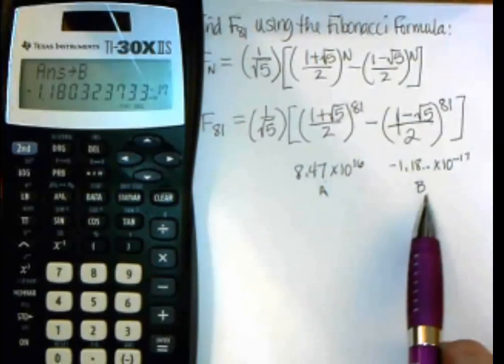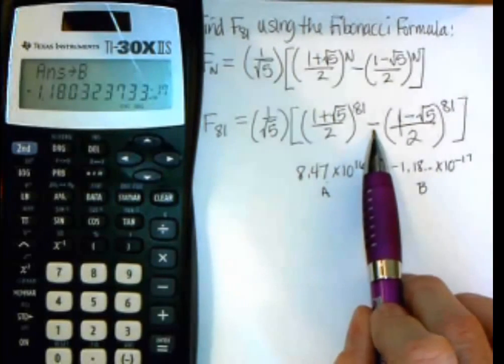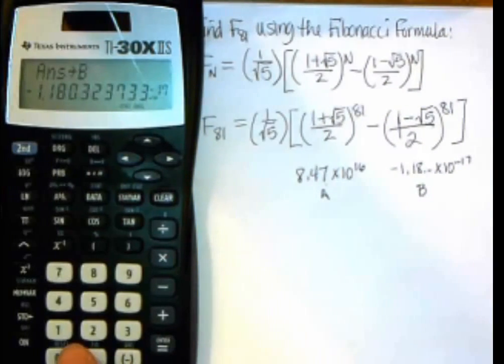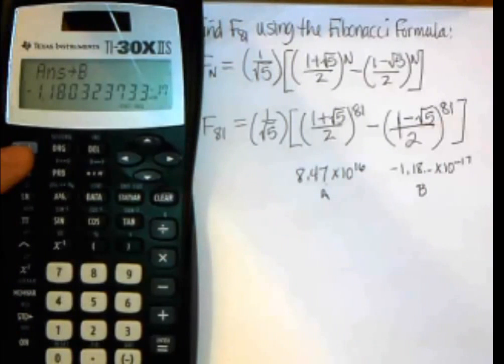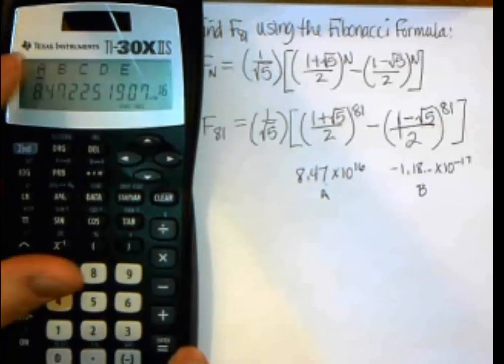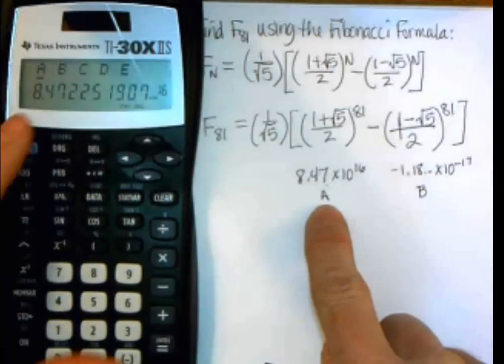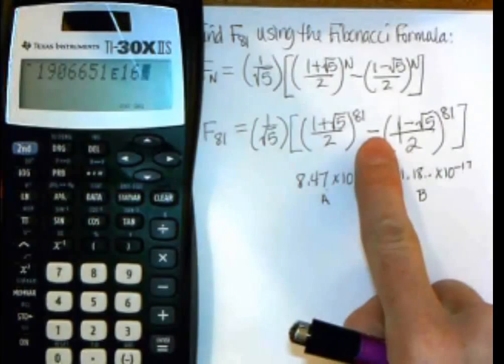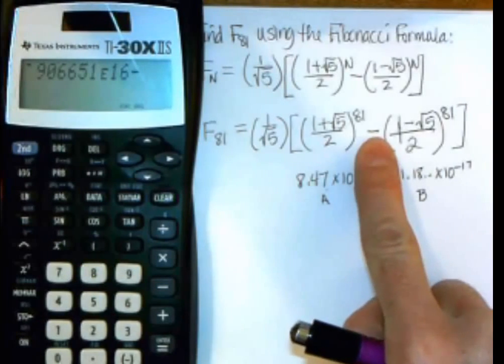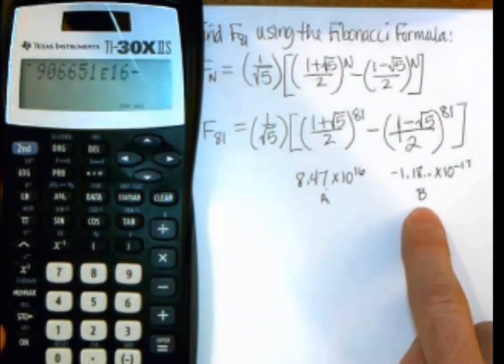So now I have this one in A, this one in B. I need to take the difference of the two. So I can say recall, which I have to use the second and the store button. So second, store, and that's doing a recall, and I want to do the A first. So I'll just push enter, because it starts on A. And then I want to subtract, so I'll put in the minus.